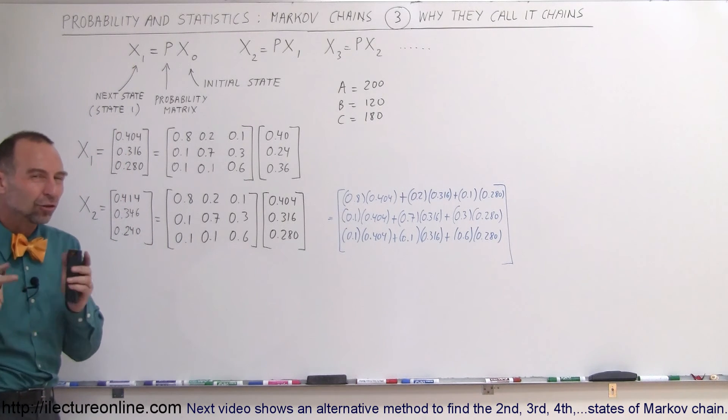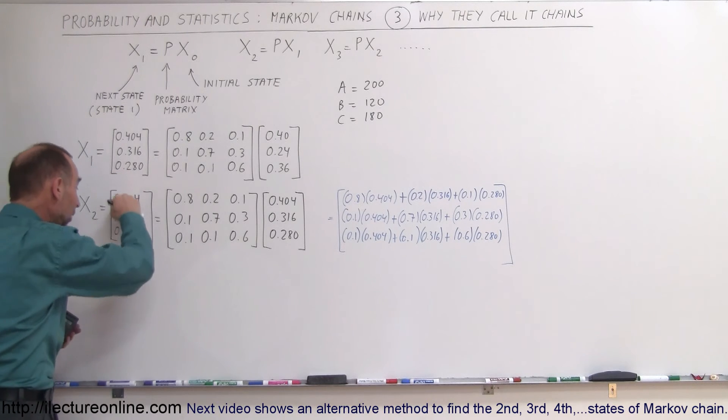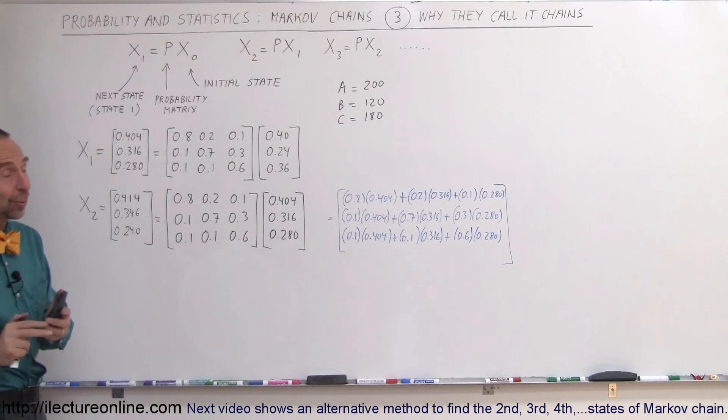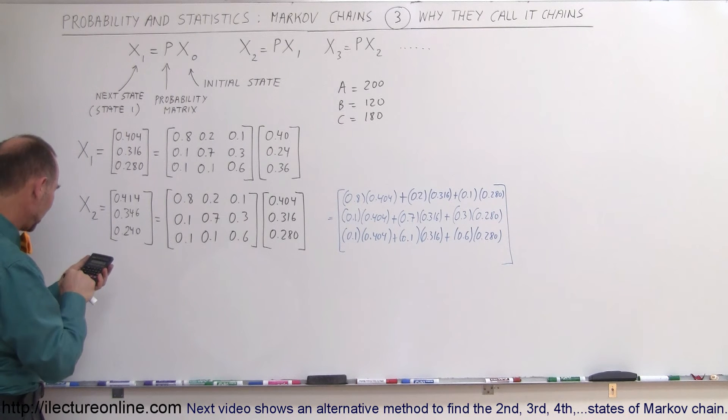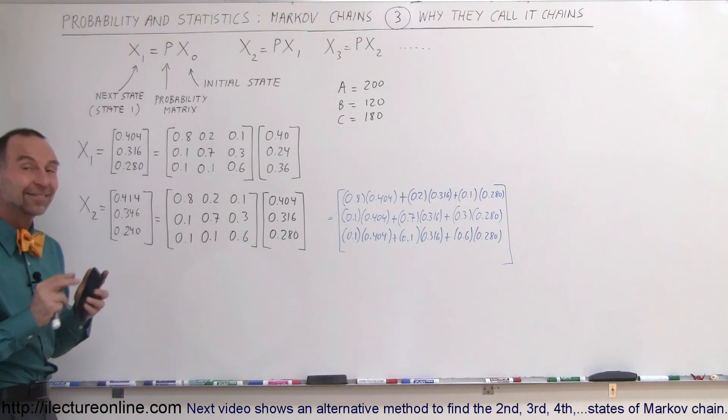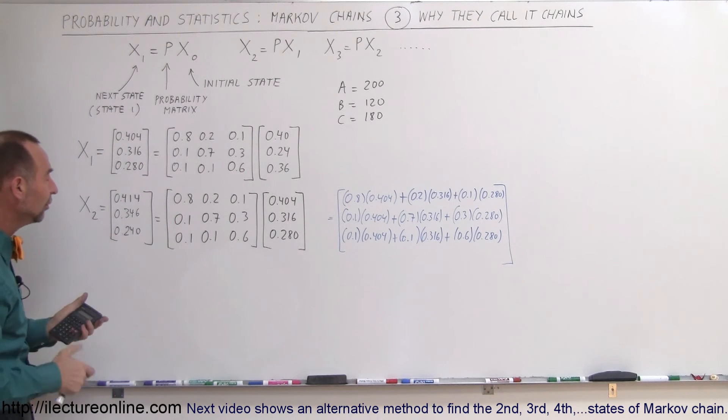We're going to multiply each of these by 500 customers. Before we do that, just to make sure we didn't make a mistake, let's add all these numbers together because they better add up to one or we made a mistake. Let's check: 0.414 plus 0.346 plus 0.24 equals, yes they do. They add up to one. So we're good.